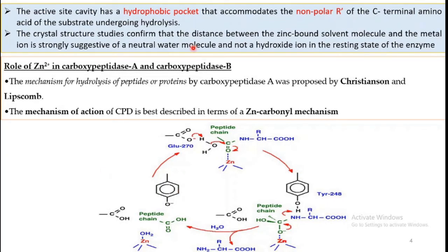Regarding the active site, each enzyme has an active site. Zinc carboxypeptidase has an active site which is a hydrophobic pocket. This is useful because the non-polar R of the amino acid will be present in this hydrophobic pocket. There is some confusion regarding whether the water molecule is present as neutral water or as hydroxide ion. From crystal structure studies, it has been confirmed that it is a neutral water molecule, because the distance between the zinc-bound water molecule and the metal suggests the water molecule is neutral and not hydroxide.